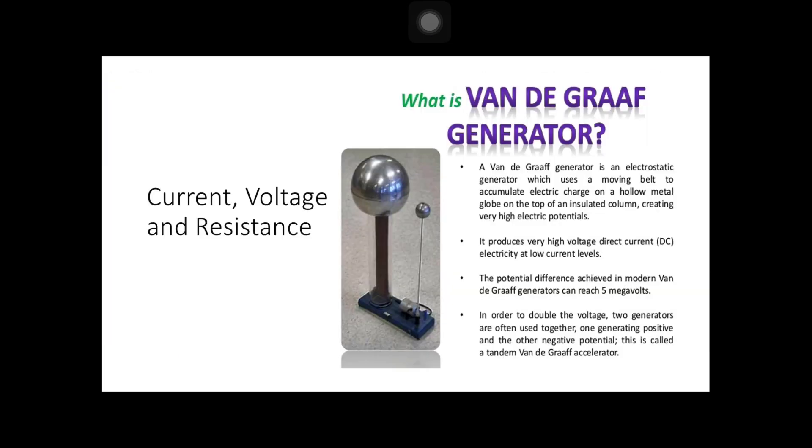Next, as you can see in the picture, we have the Van de Graaff generator. It is an electrostatic generator which uses a moving belt to accumulate electric charge on a hollow metal globe on top of an insulated column, creating very high electric potentials. It produces very high voltage direct current electricity at low current levels.